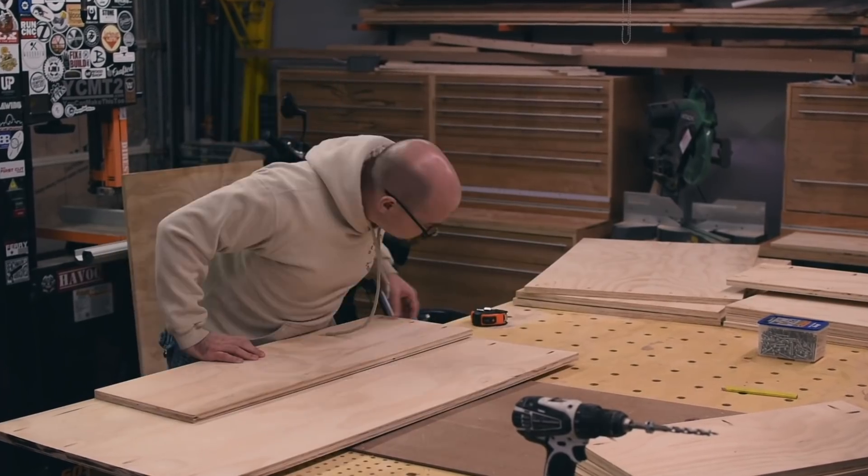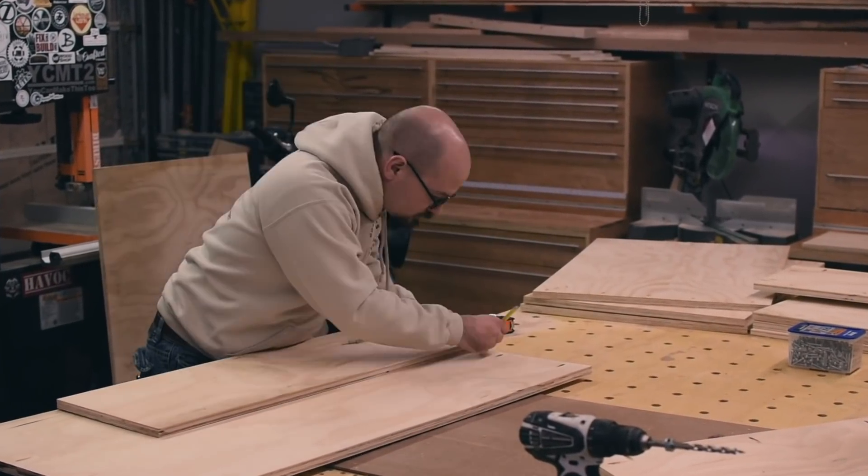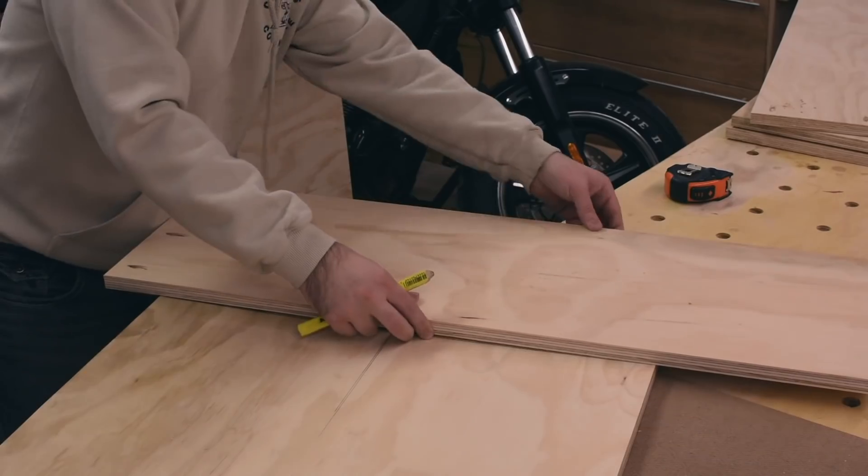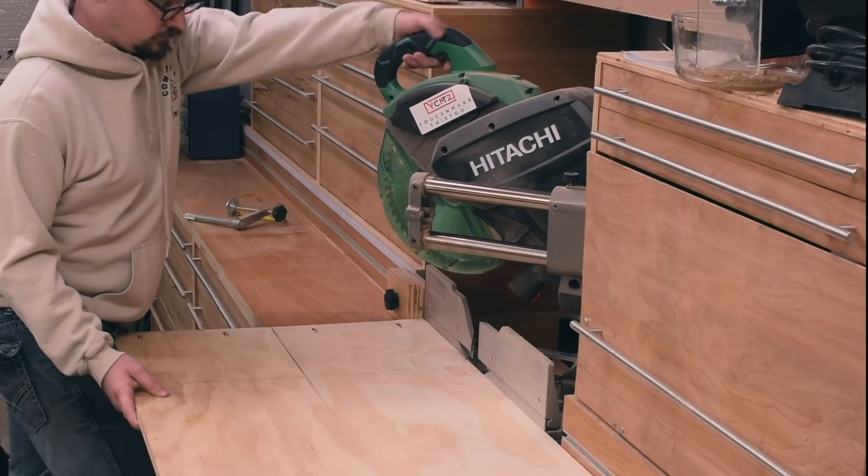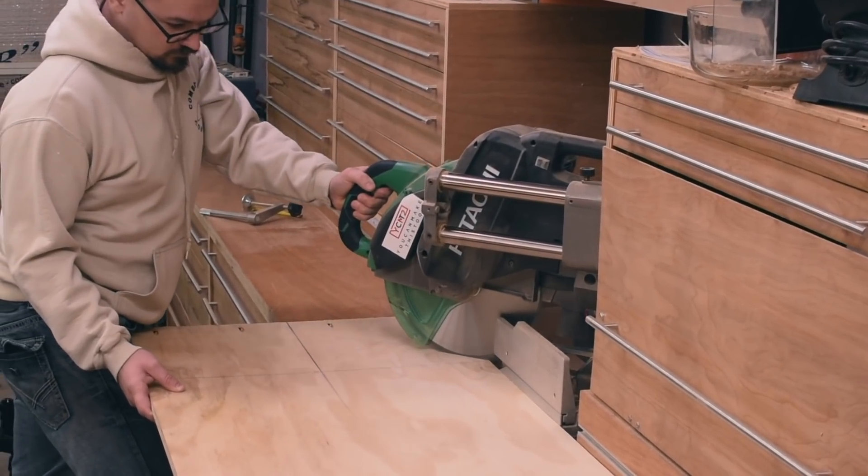Now my wife wanted the storage unit to have a clipped corner, so I used what will be the side piece to mark where to cut and then went to the miter saw to clip the corners on the shelves top and bottom.